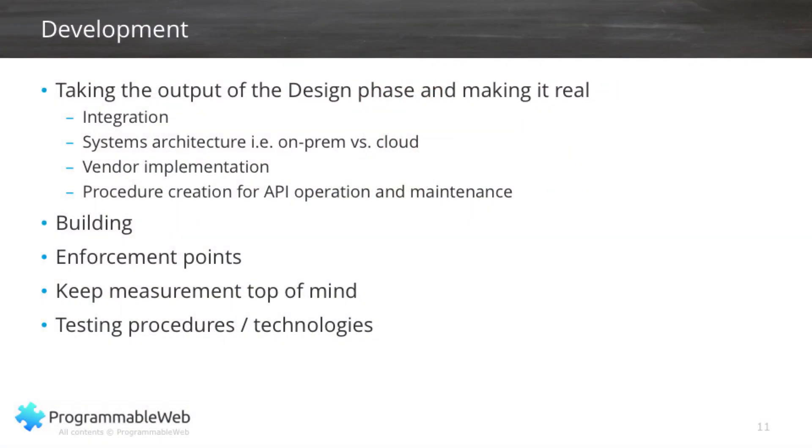Some organizations have built their APIs so that they auto-scale — if demand starts to outstrip the horsepower you have behind your API, it can automatically scale. Once those decisions are made, you can start to build out your API. Enforcement points are very important to think about at this point, because you're going to have a whole bunch of policies around your APIs. For example, those different tiers we talked about earlier — you have different tiers of users and you have to think about what technology you need in place to make sure that people who have a right to use one tier may not have the rights to use the next.